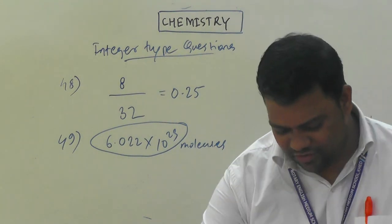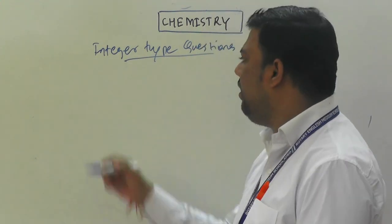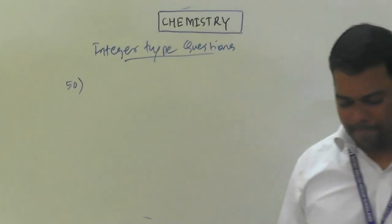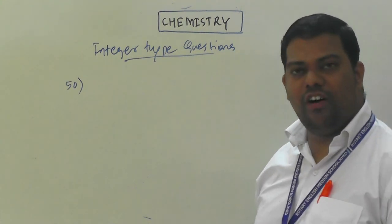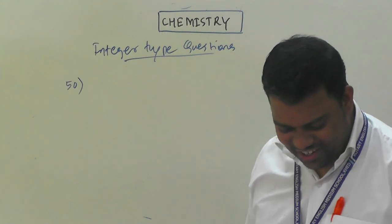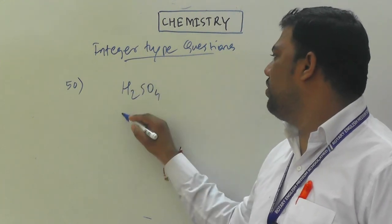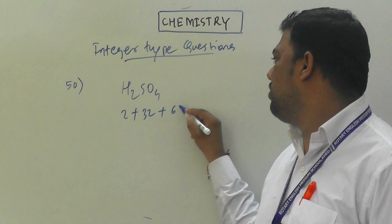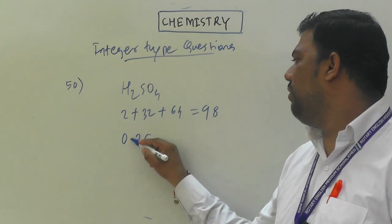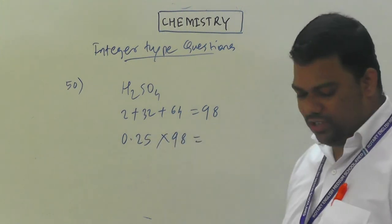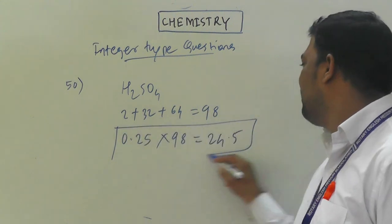Last question, number 50: how many grams of H₂SO₄ are present in 0.25 gram moles of H₂SO₄? Molar mass of H₂SO₄: H₂ = 2, S = 32, O₄ = 64, total = 98. Multiply: 0.25 × 98 = 24.5 grams.